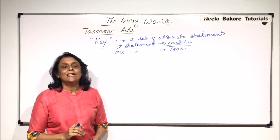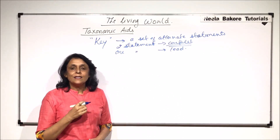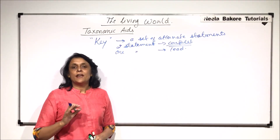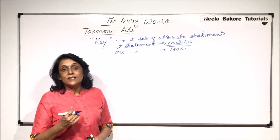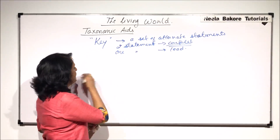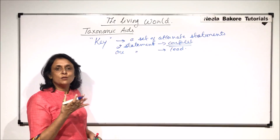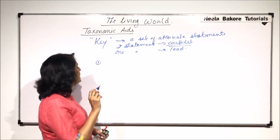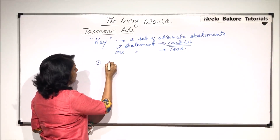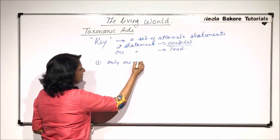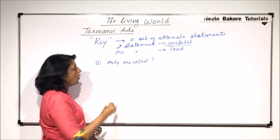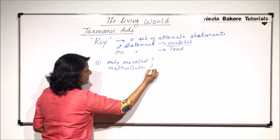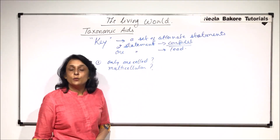Let us write a very simple key which will help us understand how exactly these keys help in identification, nomenclature, or placing an organism in the proper category. Say we are talking about a new organism which has been found. Our first couplet is going to have two statements. It says: only one cell organism, or multicellular organism. This is a couplet.